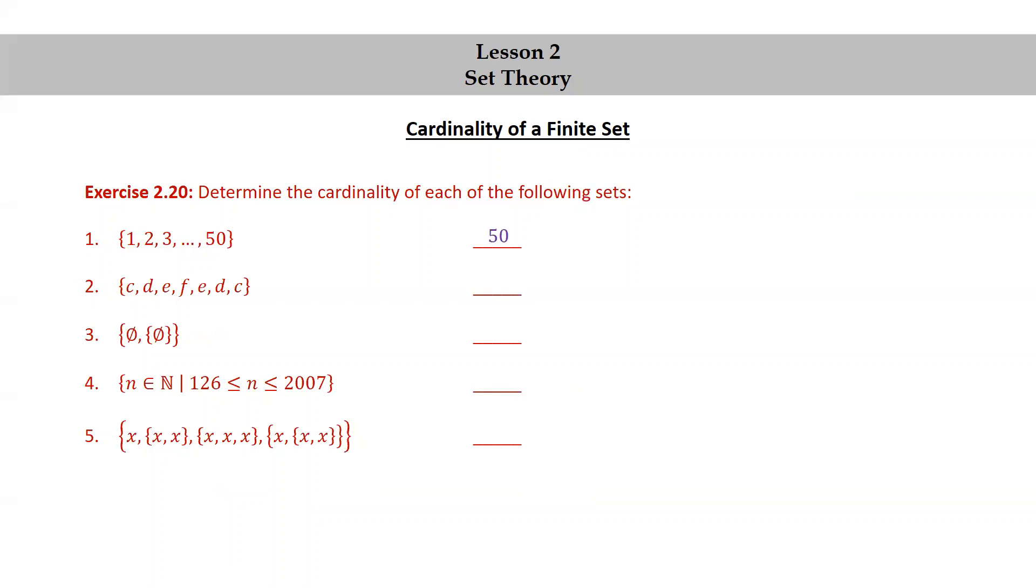The set consisting of {c, d, e, f, e, d, c}. Well, first, let's just cross out the repeats. e, d, and c are listed twice, and then we can see that there are four elements in that set.